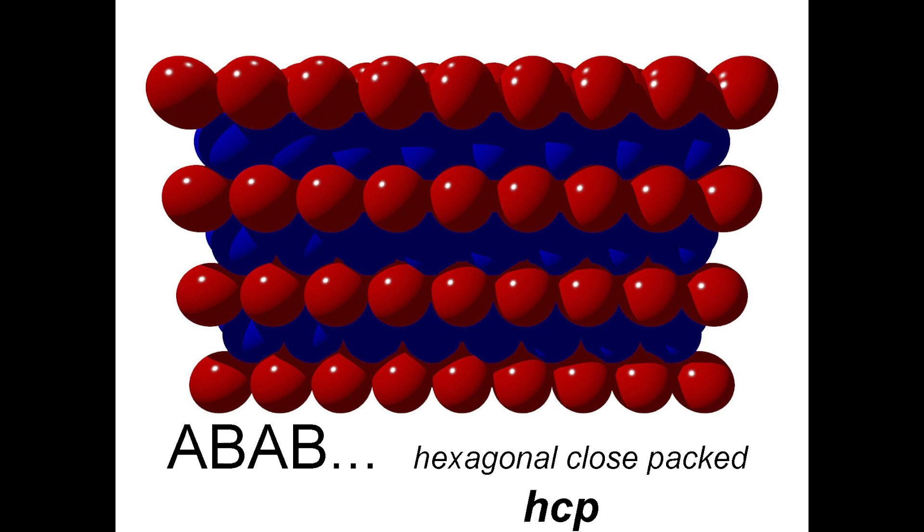Remember, a hexagonal close pack structure is comprised of close packed layers stacked one on top of the other in an ABAB format.